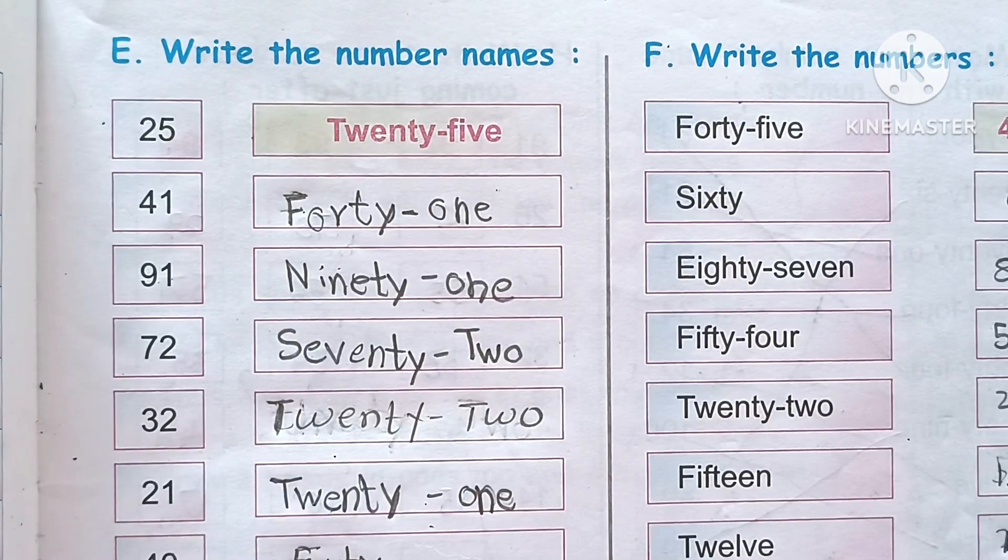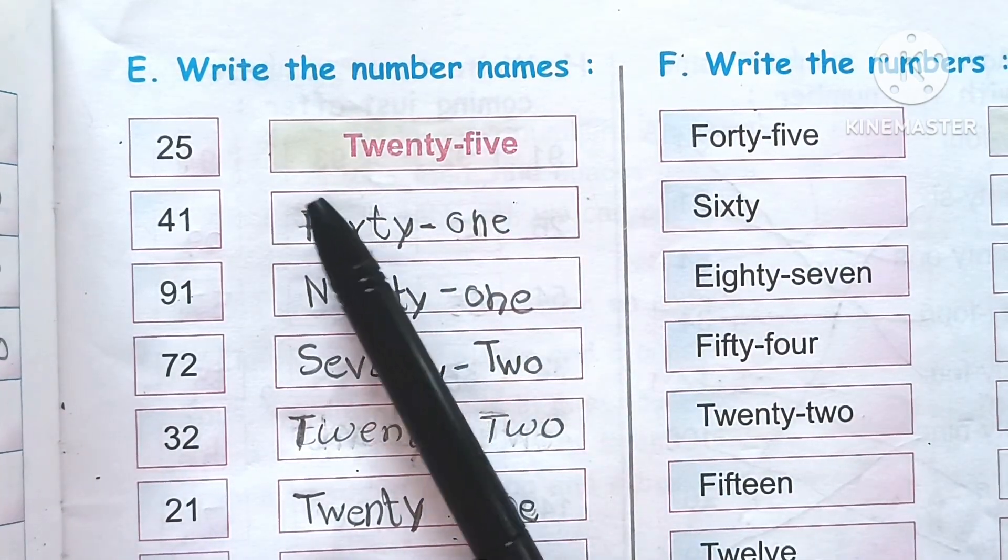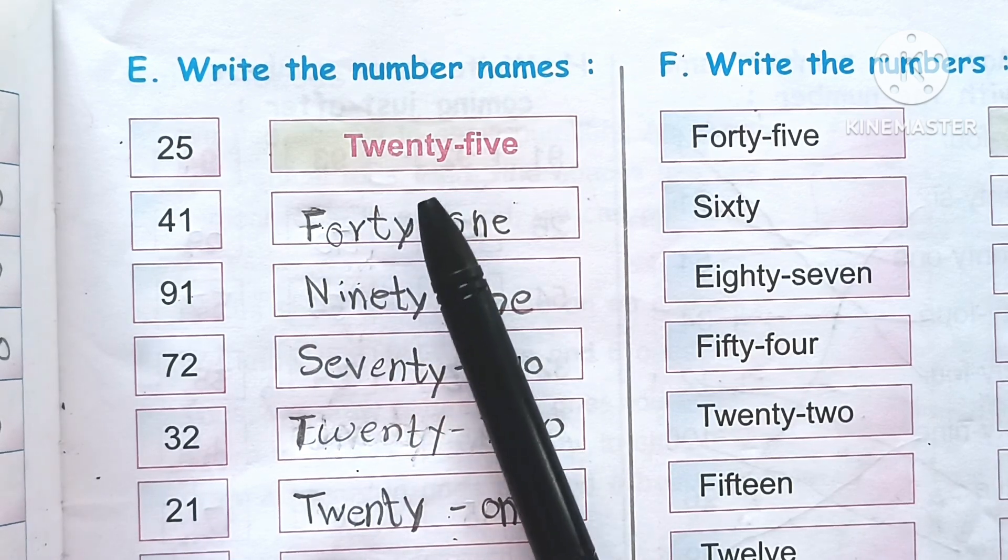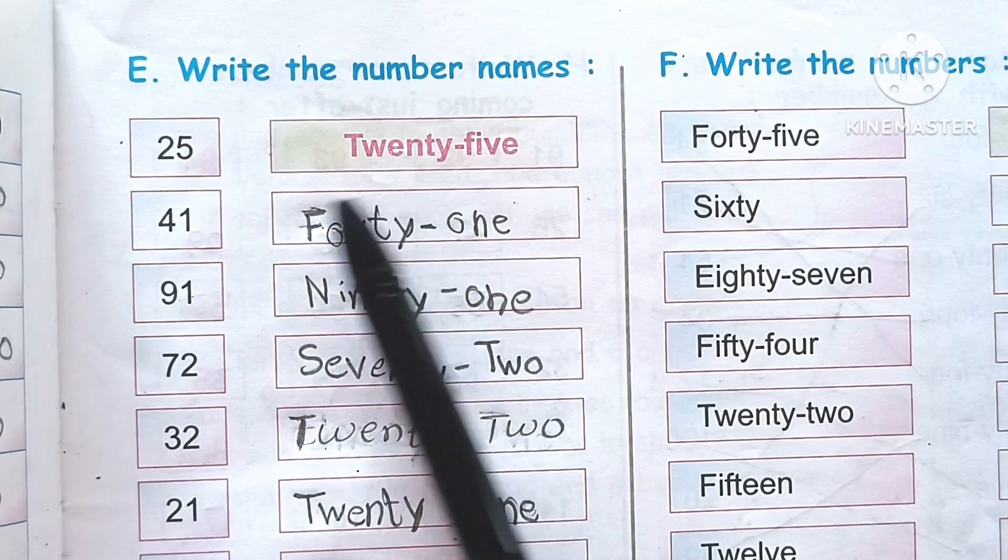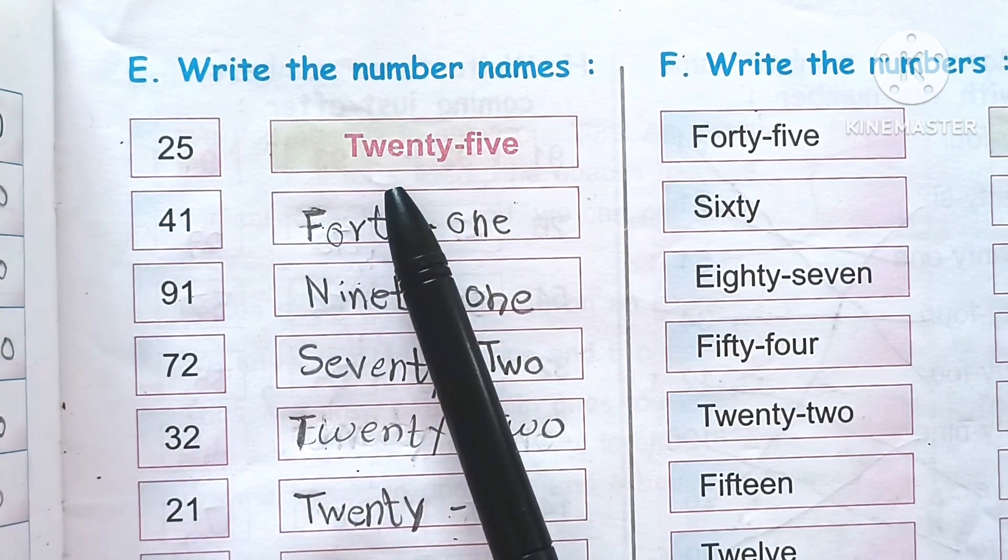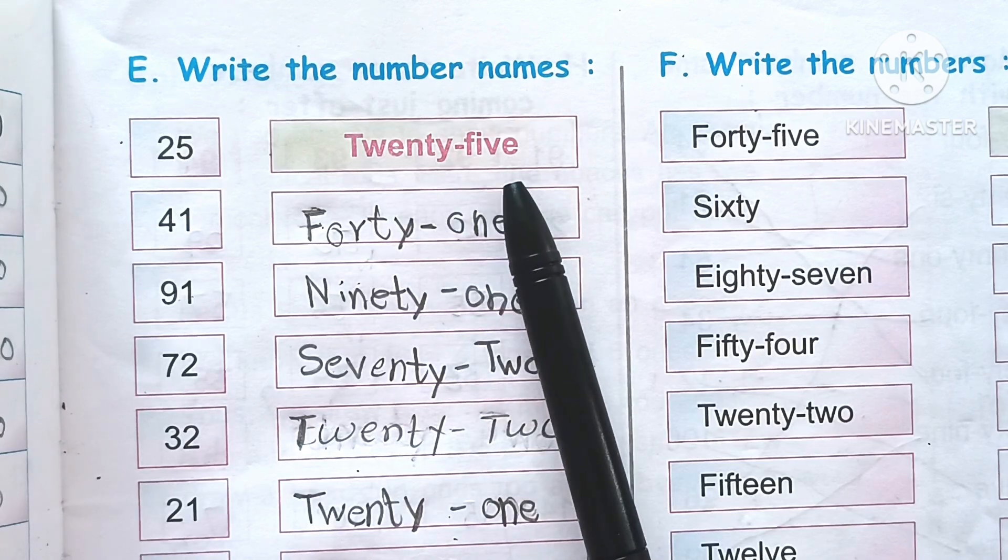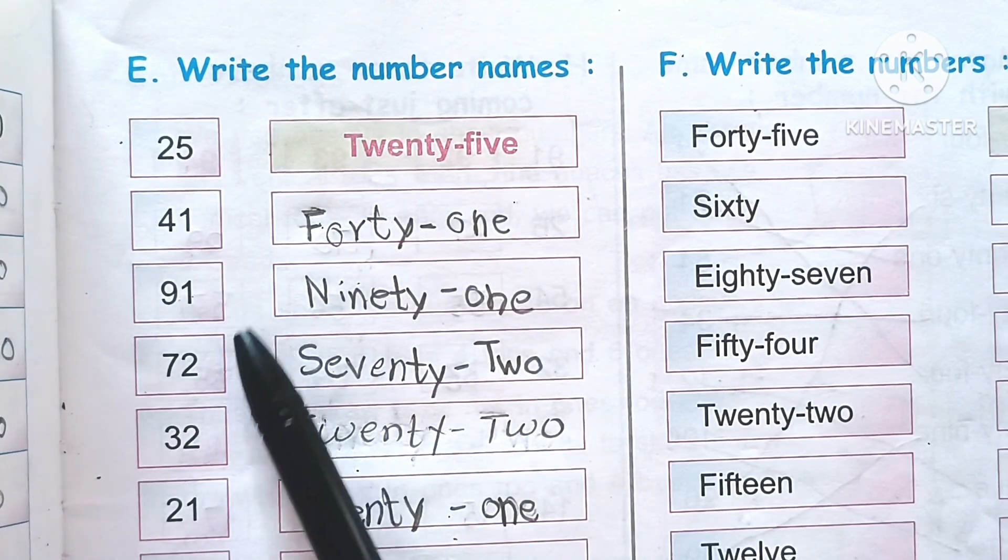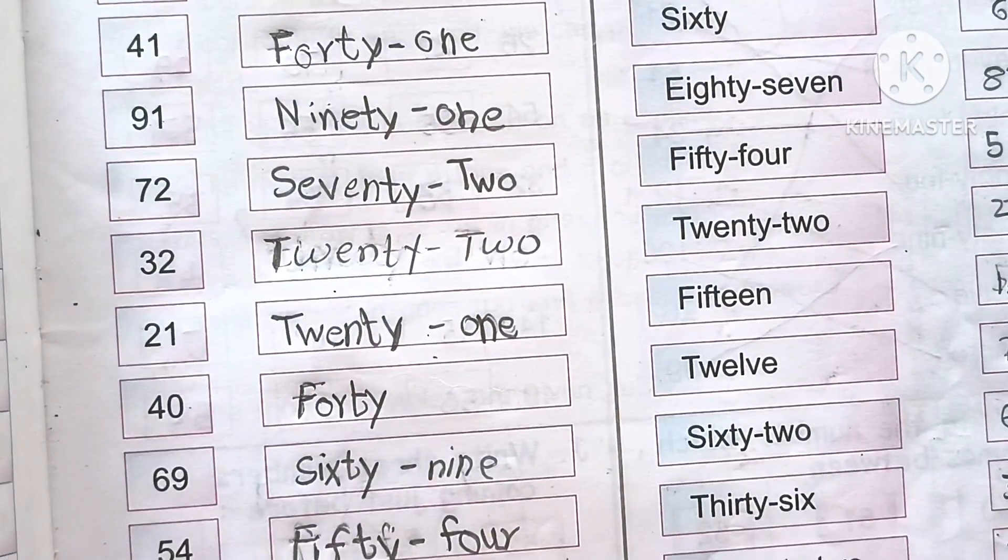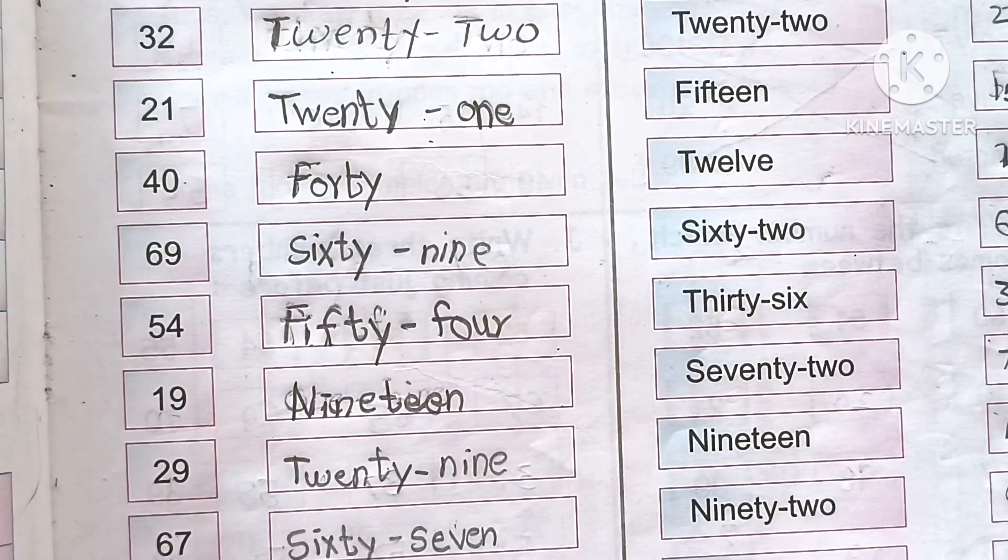The next question: write the number names. This is very easy, one to hundred number names. We have simple number names like twenty-five, forty-one, ninety-one, seventy-two, thirty-two, twenty-one, and you have to write all of them.